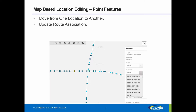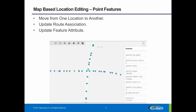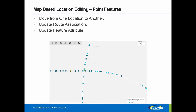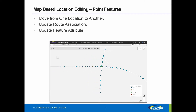You simply type in the new route information and then select it, and that will update the record. Next, you can update the attribute. So if this really ought to be carrying a traffic signal, you can then specify that information in the attribute for that, and that information will be updated. As you can see here, the styling has been updated to now account for the fact that that structure is carrying a traffic signal.